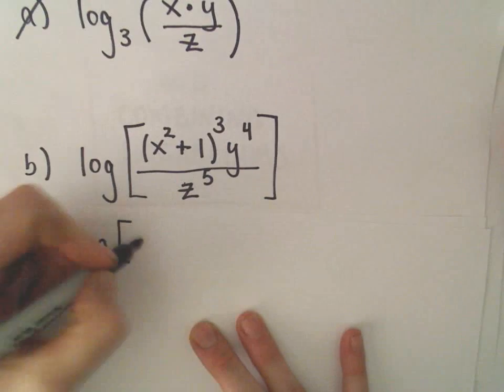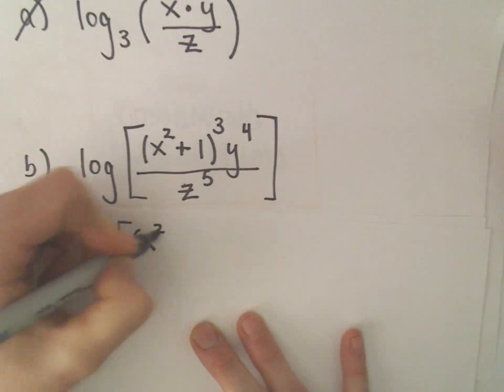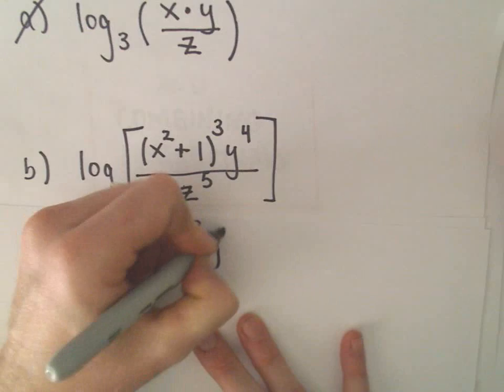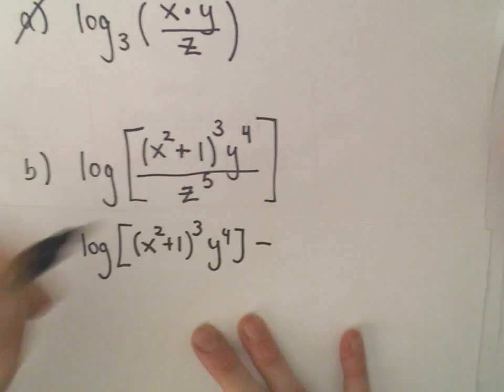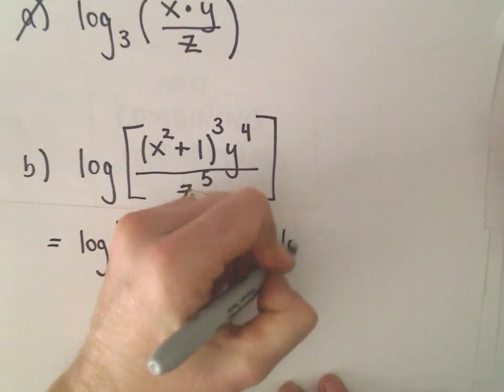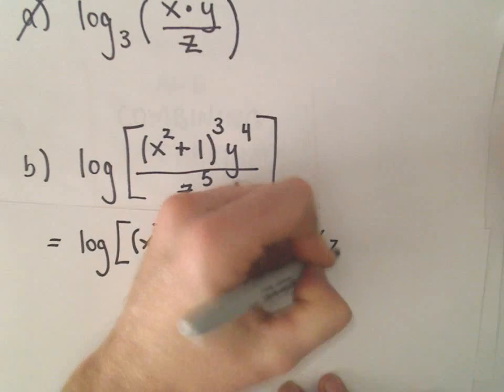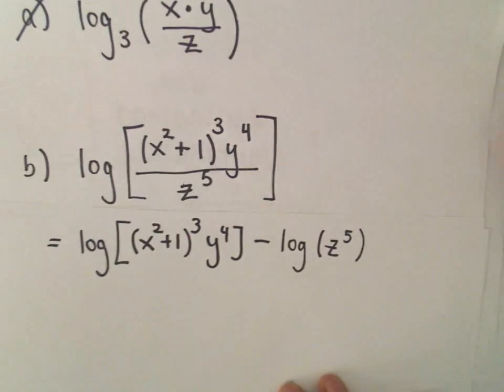So I'm going to leave everything in the numerator alone. I'm just going to rewrite it just like it was. And I'm going to subtract away the logarithm of whatever's in the denominator.